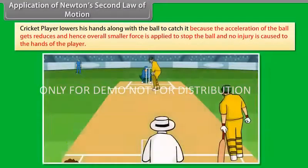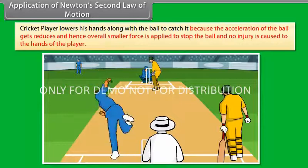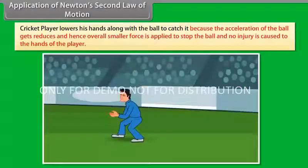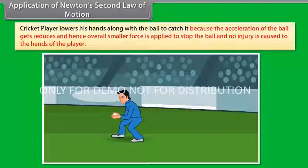A cricket player lowers his hands along with the ball to catch it because the acceleration of the ball gets reduced, and hence overall smaller force is applied to stop the ball and no injuries are caused to the hands of the player.